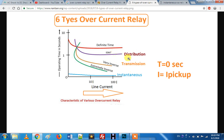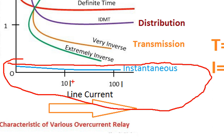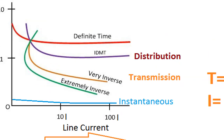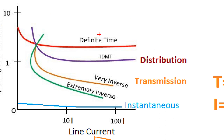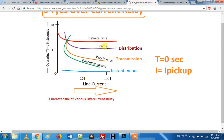Let's look at the first one — instantaneous. The instantaneous relay has no intentional time delay. For the definite time relay, we use the current — normally for overload. We consider the current and set the same time; you can set it at the circuit breaker.